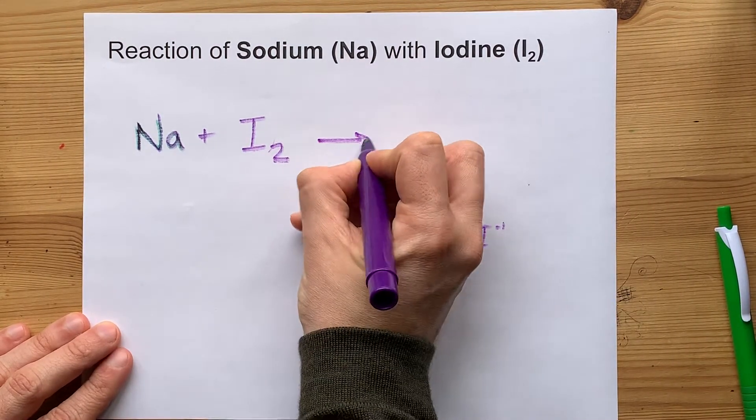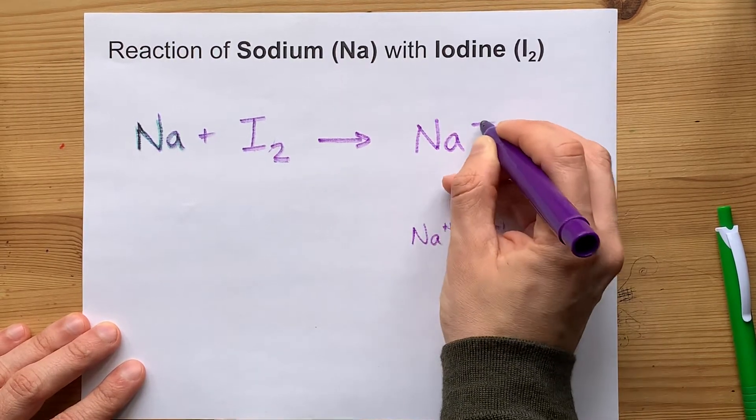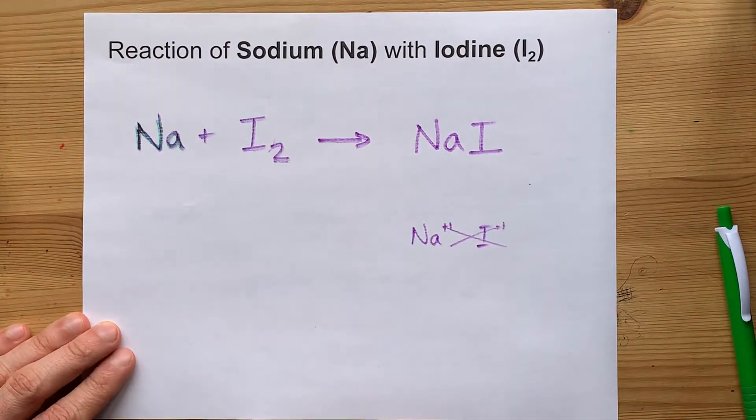When you crisscross those charges, you need a one-to-one ratio of each of them, and you end up with solid sodium iodide.